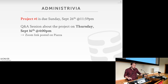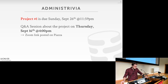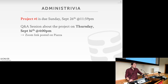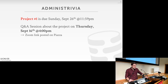Project number one, which was released on Monday, will be due on Sunday, September 26th at 11:59 p.m. There's going to be a Q&A session to cover more detailed questions about the project on Thursday, September 16th, which is tomorrow at 4 p.m. There is a Zoom link posted on Piazza where you can join. I would encourage everyone to at least look through all the information on the assignment page and in the code, so you can ask more detailed questions or better absorb the details discussed at the Q&A session.